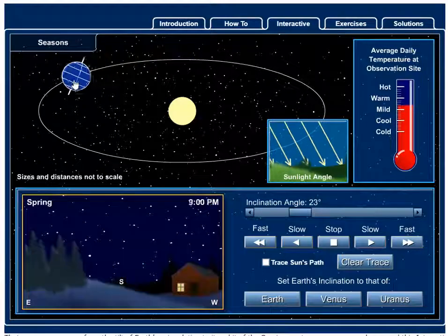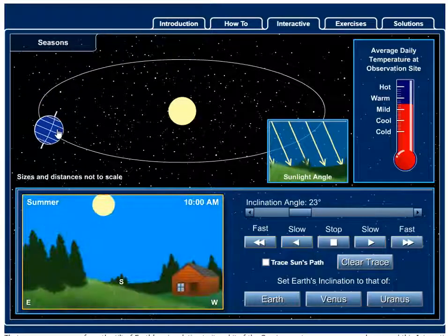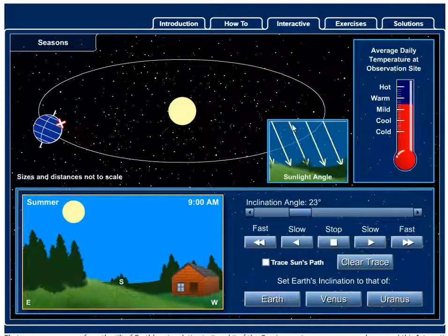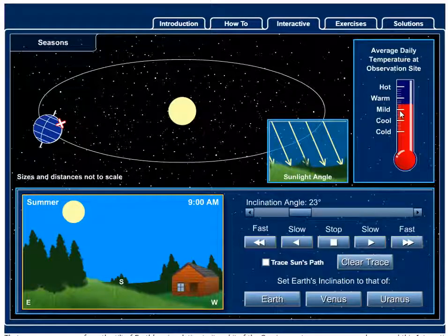I'm going to move it over to summer. I'm going to hit about mid-summer here. High Sun in the sky. More direct sunlight. And because those rays are straight up and down it creates more warmth. The temperature is warmer there as well.